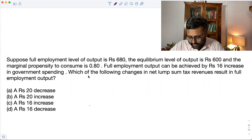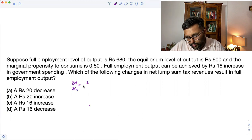So let's have a look at this. So what is given to you? You are given that MPC is 0.8, right? So that is equal to 1 upon 1 minus C. That is your government expenditure multiplier.